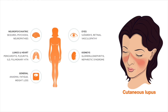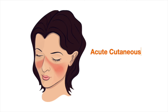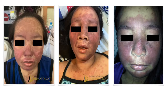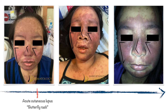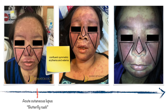First on the spectrum, we have acute cutaneous lupus erythematosus, or ACLE. Localized ACLE presents with a malar rash, commonly referred to as the classic butterfly rash. It is a confluent symmetric erythema and edema centered over the malar eminences that bridges over the nose, with the nasolabial folds characteristically spared.